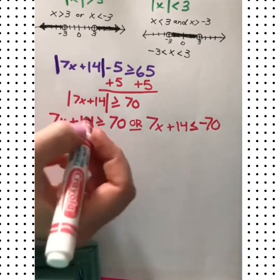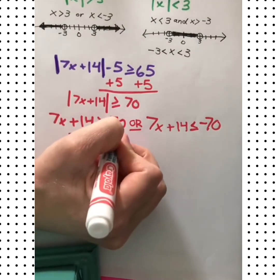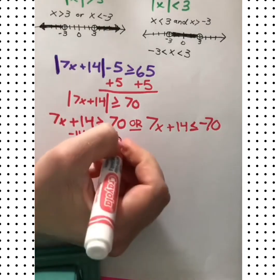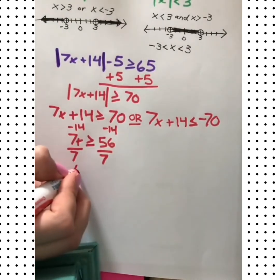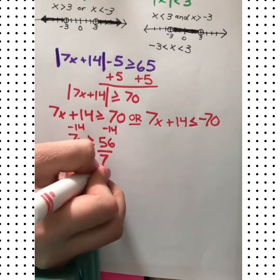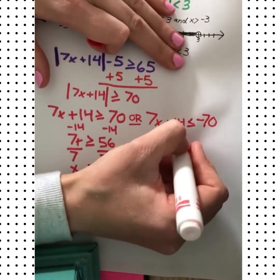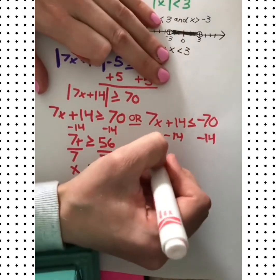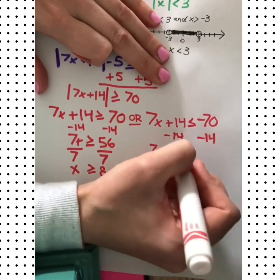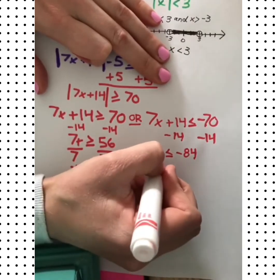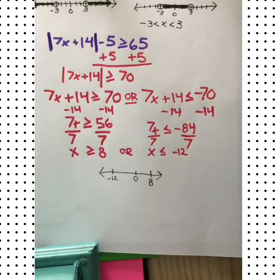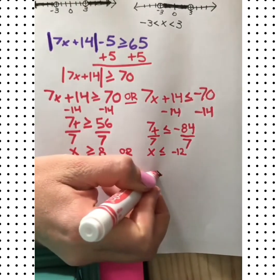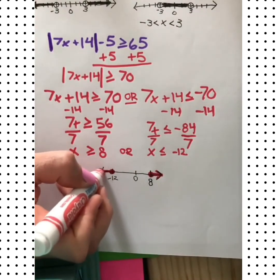On a number line, our arrows will be pointing away from each other. We have greater than or equal to positive 8, so that's a closed circle, and we have less than or equal to negative 12.